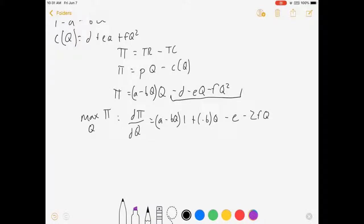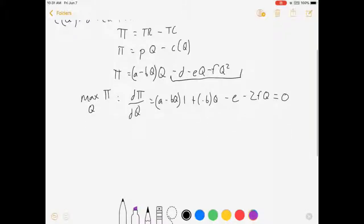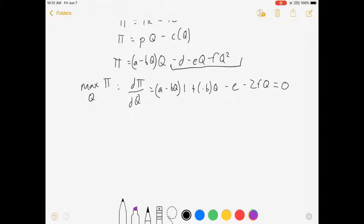And I'm going to take that derivative, and in order to maximize profit I set that derivative equal to 0. Now let's simplify this equation real quick. This gives me A minus BQ minus BQ, and that's going to be equal to E plus 2FQ.